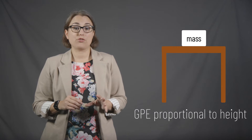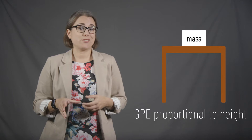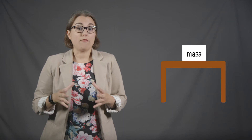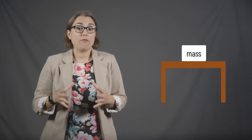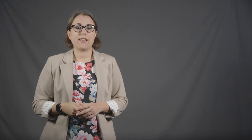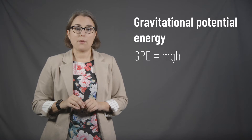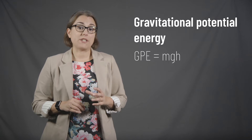What the height is measured in relation to — sea level, ground level, floor level, or something else — is up to you to decide. GPE could also increase if the object were on a planet with a larger gravitational acceleration, such as Jupiter or Saturn, and would be less on a planet like Mars. The equation for gravitational potential energy is GPE = m × g × h, where m is mass in kilograms, g is gravitational acceleration in meters per second squared, and h is the height above the reference level in meters.